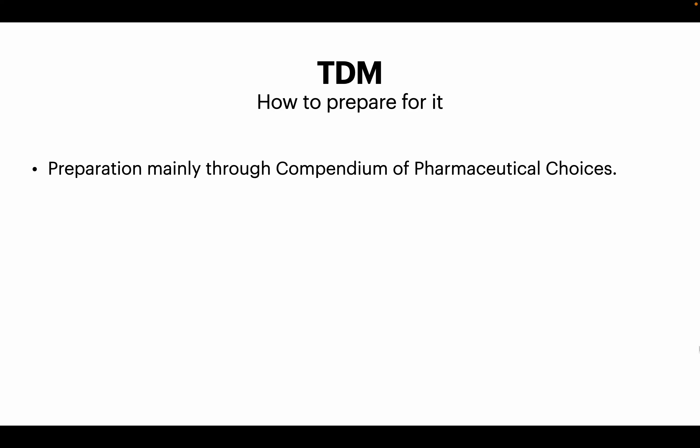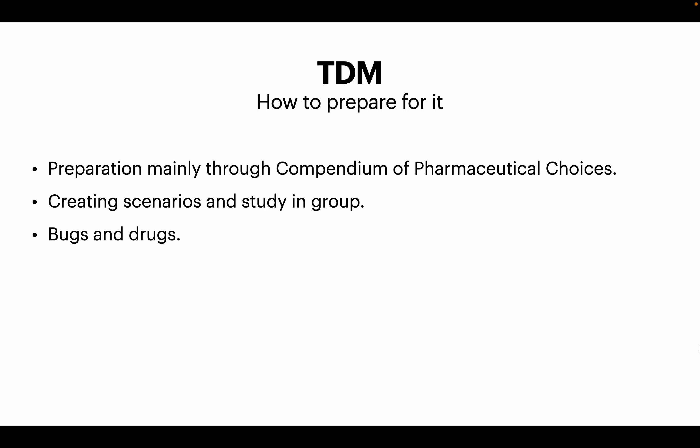How to prepare for the Therapeutic Decision Making test? In my opinion, preparation is best done through the Compendium of Pharmaceutical Choices (CPC) book, and also through creating scenarios in a study group — that is the best way to prepare. There is also the application Bugs and Drugs, which contains most antibiotic names, treatments, and dosages used in Canada. UpToDate is also recommended for guidelines on common medical conditions.